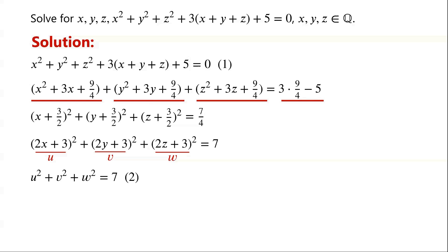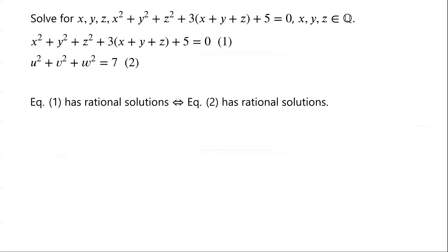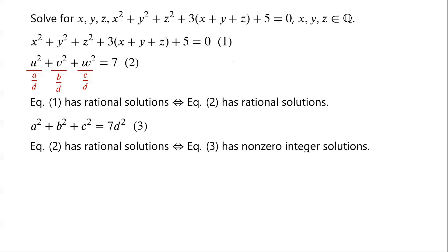By substitutions, equation 1 is converted to equation 2. We can see that equation 1 has rational solutions if and only if equation 2 has rational solutions. Assume that equation 2 has rational solutions. We let u equal a over d, v equal b over d, and w equal c over d, where a, b, c, and d are integers and d does not equal 0. Then equation 2 becomes a squared plus b squared plus c squared equals 7d squared.